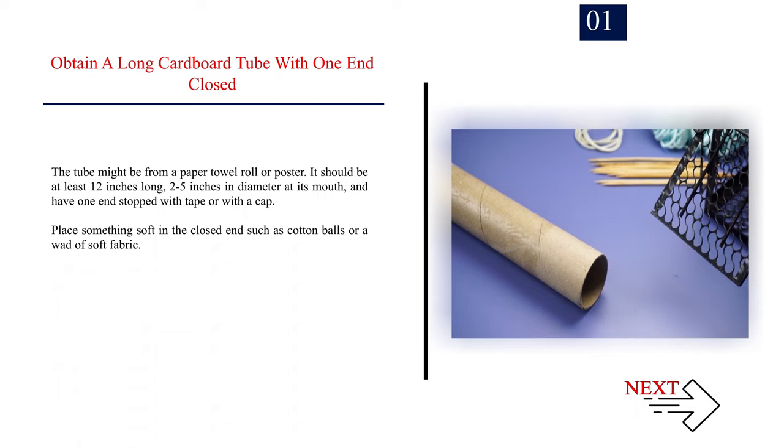Method 1: Making a cardboard roll mousetrap. Number 1: Obtain a long cardboard tube with one end closed. The tube might be from a paper towel roll or poster. It should be at least 12 inches long, 2 to 5 inches in diameter at its mouth, and have one end stopped with tape or with a cap. Place something soft in the closed end such as cotton balls or a wad of soft fabric.